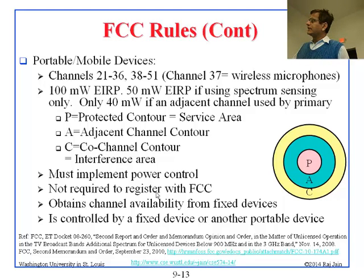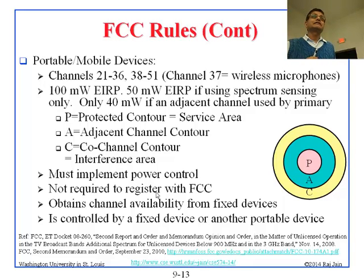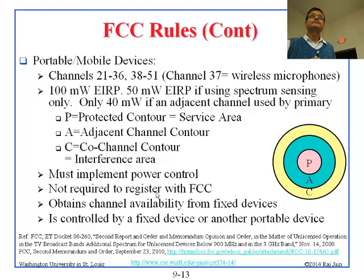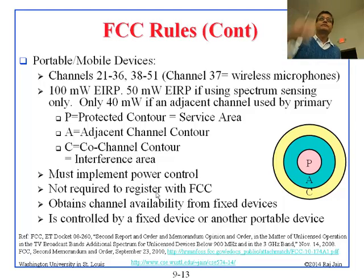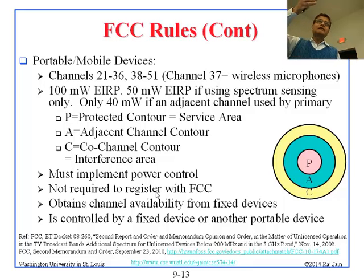In the adjacent channel area, if you are there using channel 3, you have to limit your transmission to 40 milliwatt. Portable devices must implement power control and are not required to register with the FCC, but they must obtain channel availability from fixed devices. They can be controlled by a fixed device or another portable device. A mobile device can be controlled by another mobile device, but eventually it has to connect to the FCC database through some fixed device.